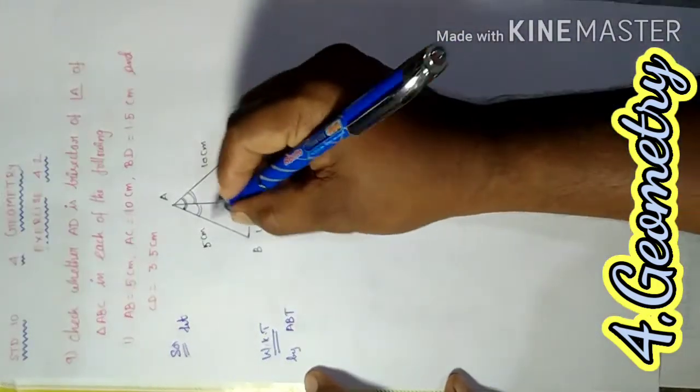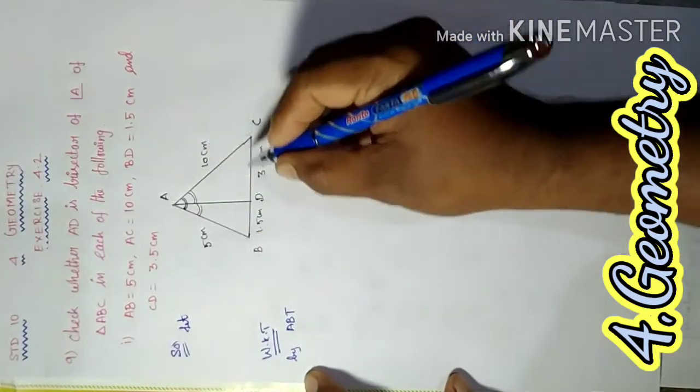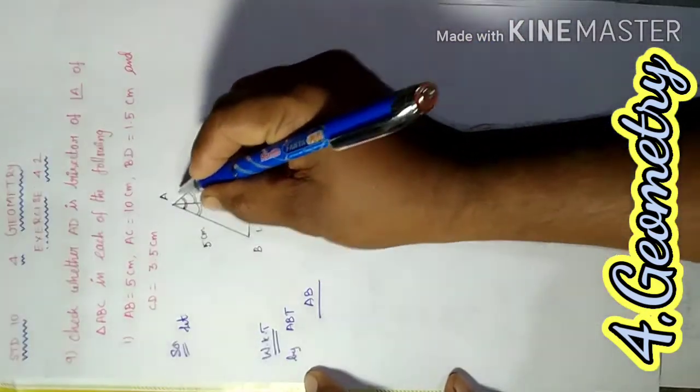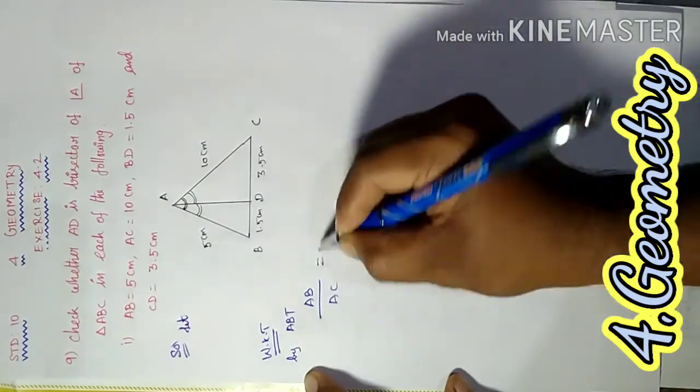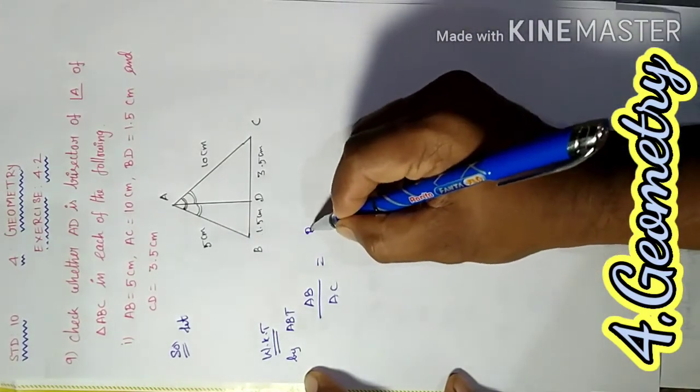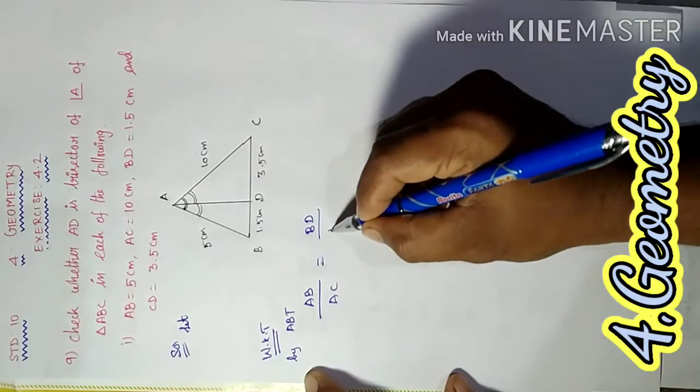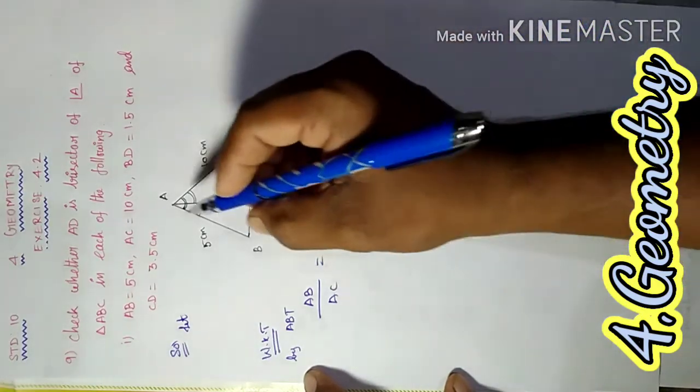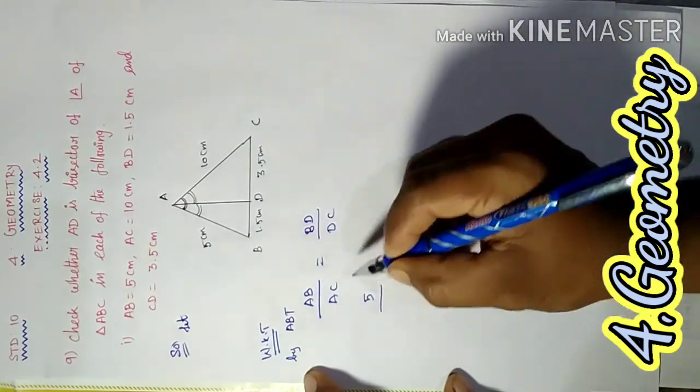theorem states that the sides are in proportion: AB by AC equals BD by DC. This is what we need to verify. So AB/AC equals